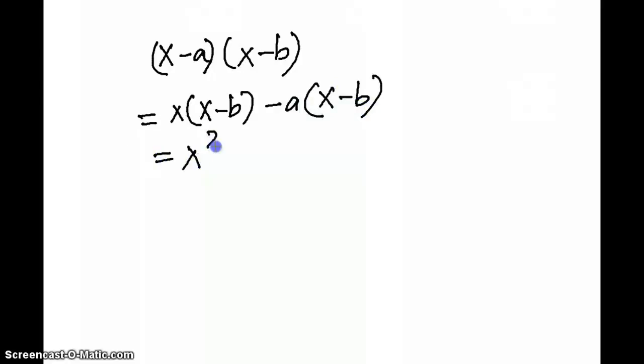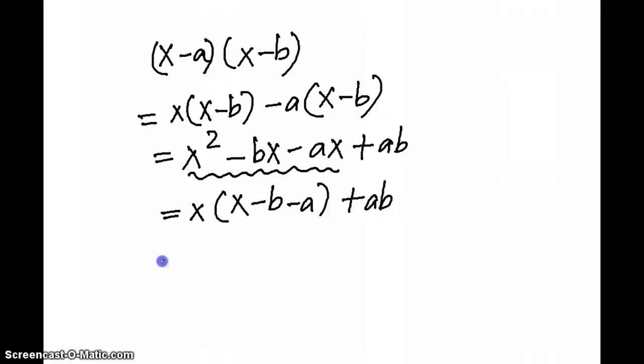This gives x² - bx - ax + ab. Taking x common from the first three terms, we get x(x-b-a) + ab, or we can write x(x-a-b) + ab.